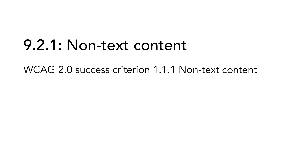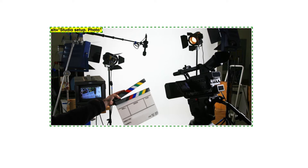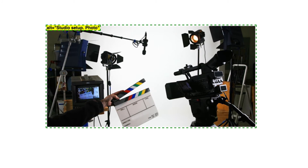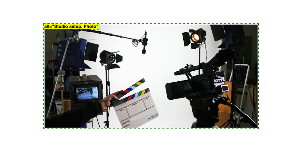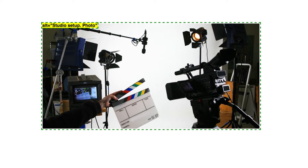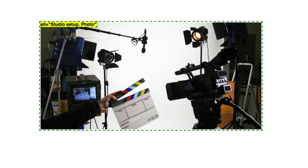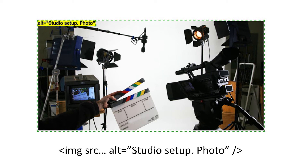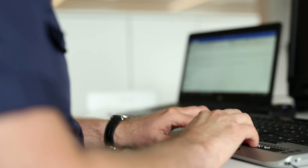9.2.1, non-text content, is based on WCAG 2.0 success criterion 1.1.1, non-text content. Since text is the easiest form of information to convert and present in different ways by assistive technology, an important idea in WCAG is to provide text equivalence to content that is not text. Most commonly, this applies to images. If you have an image that gives some information to the user, there should also be a text giving the same information. On an ordinary web page, this is often done with the HTML code for Alt, which is picked up by assistive technology so that users that cannot see the image get the equivalent information. The requirement applies to all non-text content that has some information or meaning to the user, not only images.